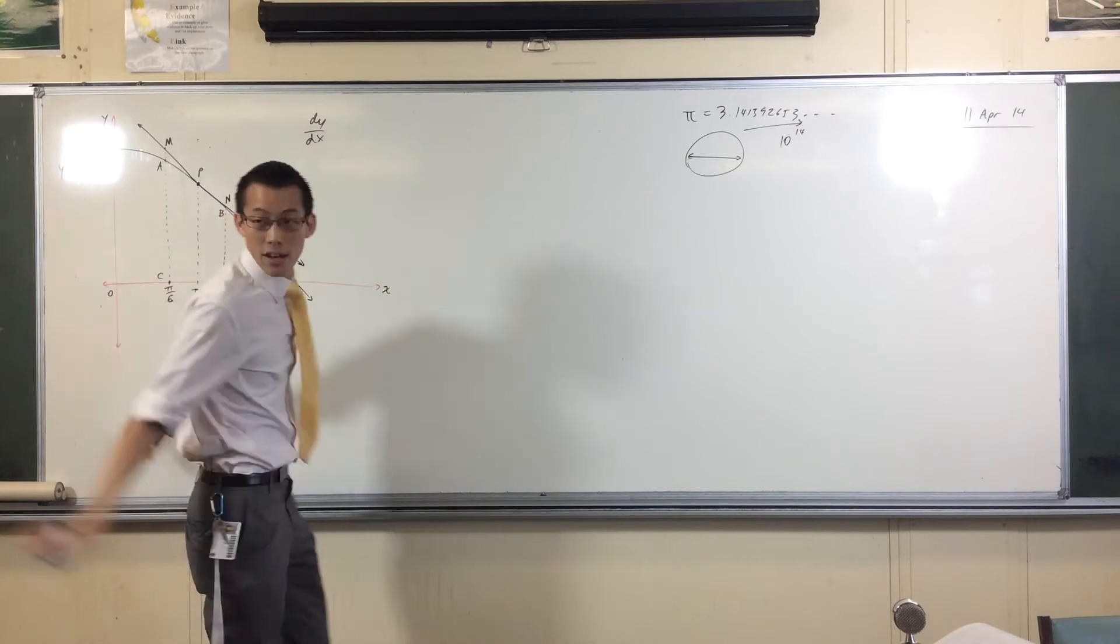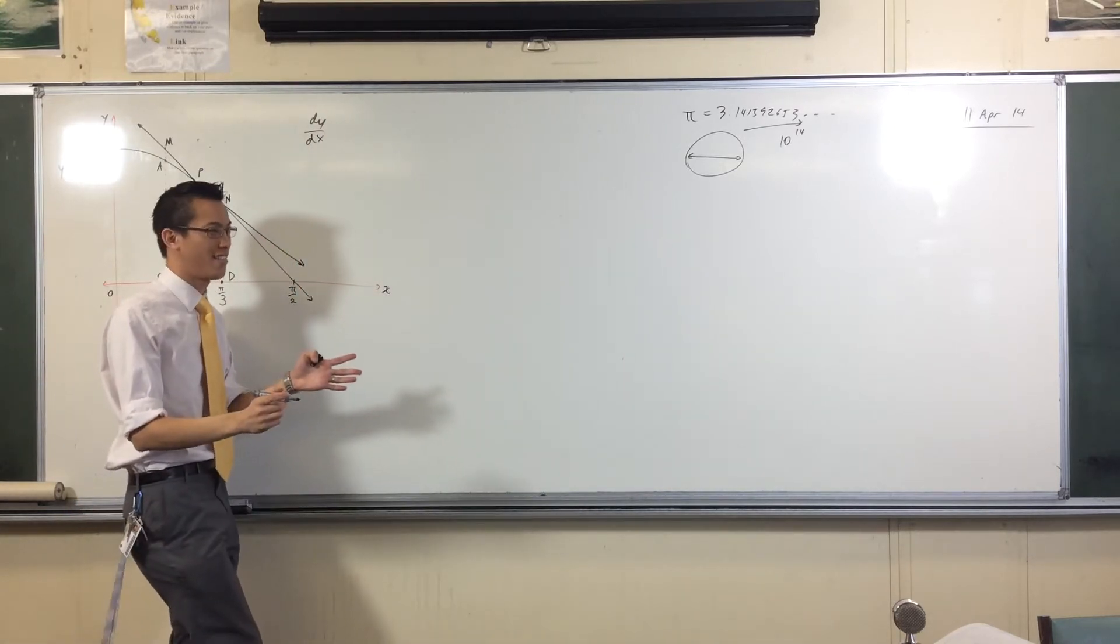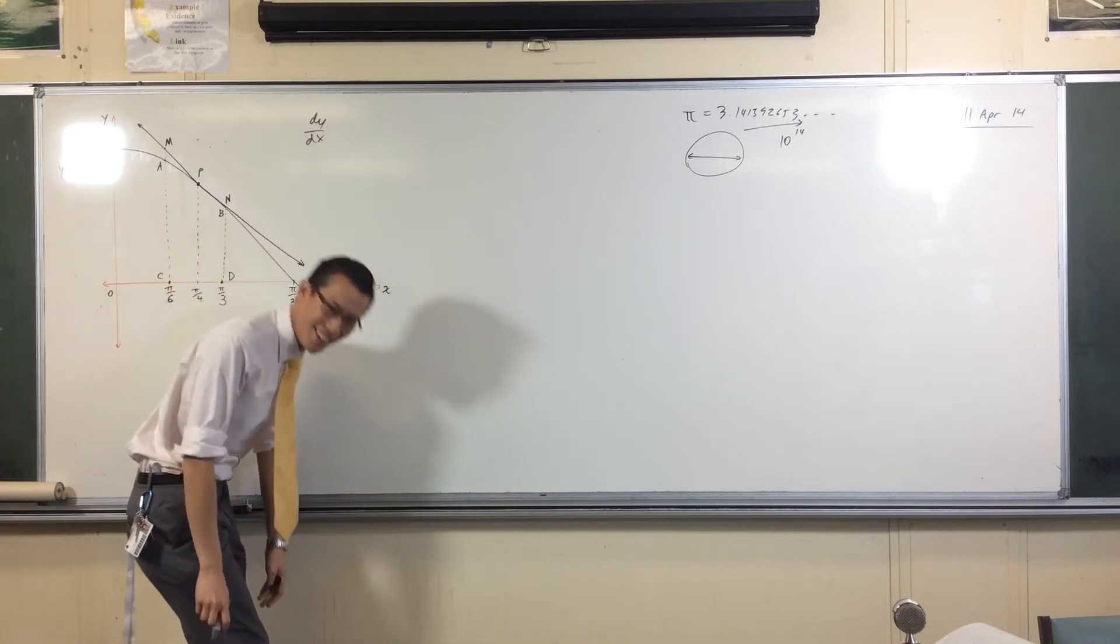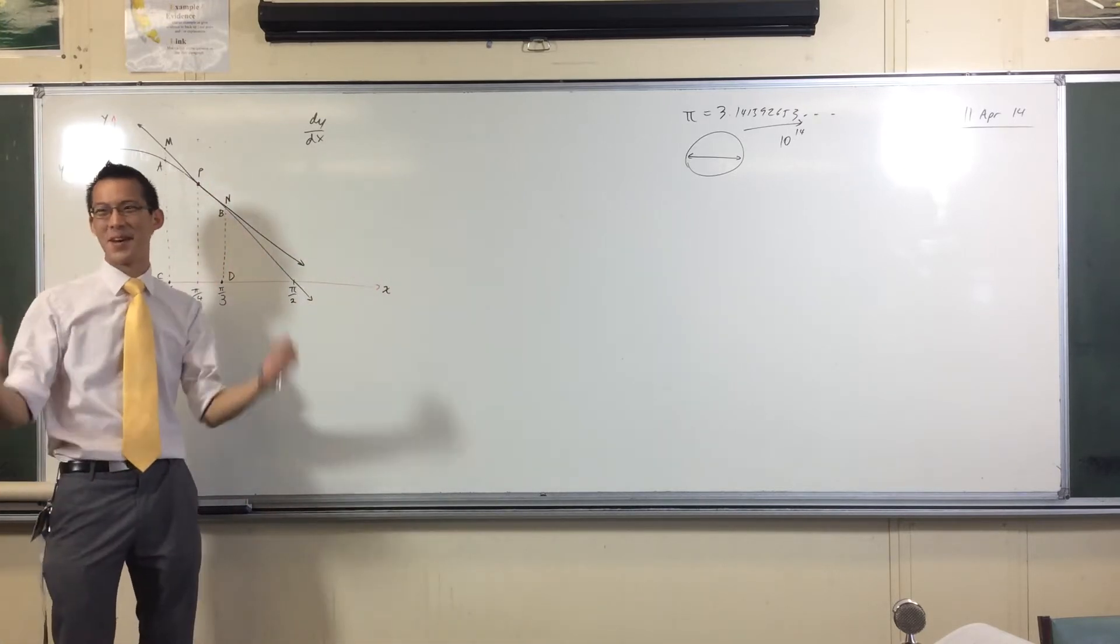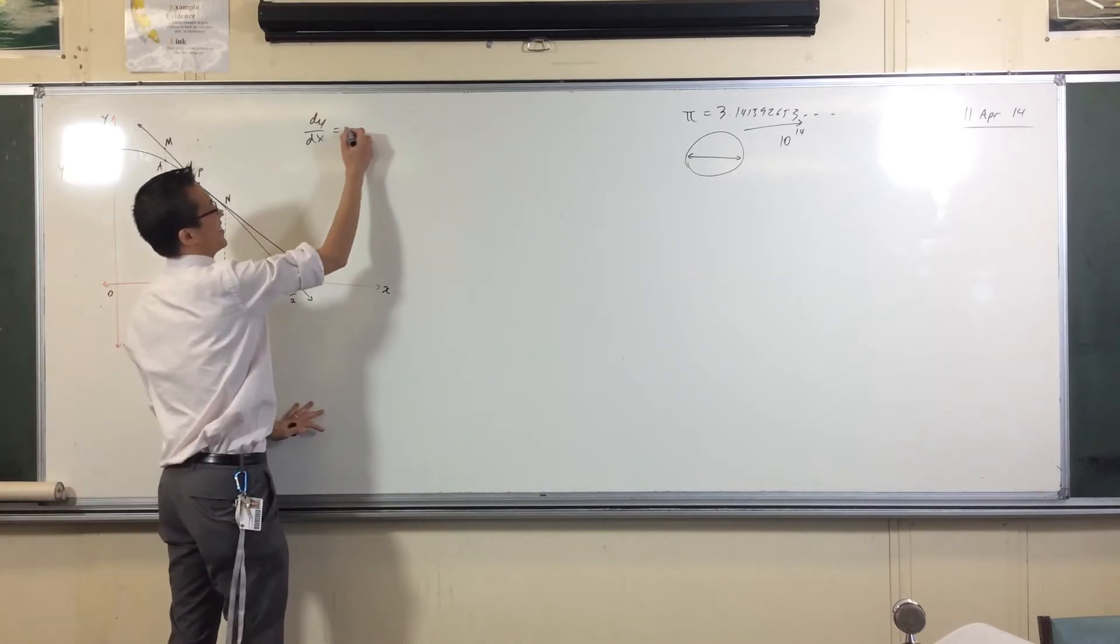So, if y is equal to cos x, the derivative, of course, is? It's the last day of school. Wow. Brain's not on yet. It's like, come on, give me a break. I even turned up to school. You should be happy that I'm here. The derivative is negative sine, okay?